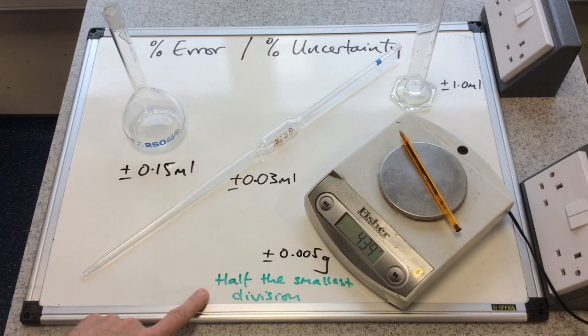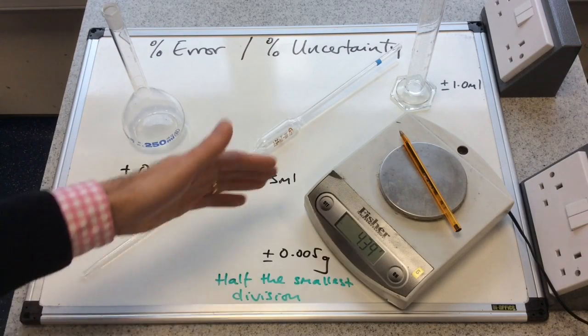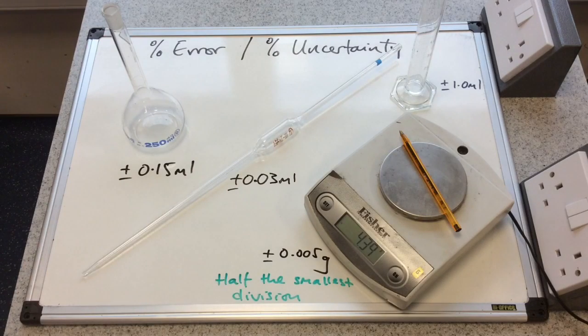You can see I've just written that up there. So half the smallest division if it's not marked on the actual piece of apparatus.